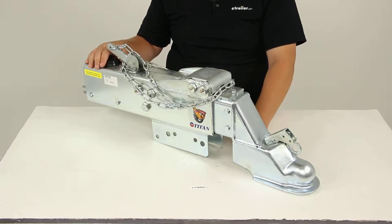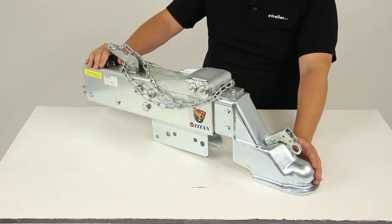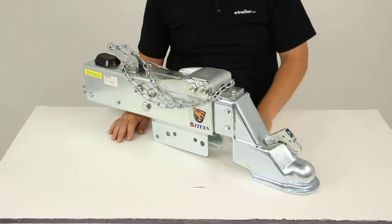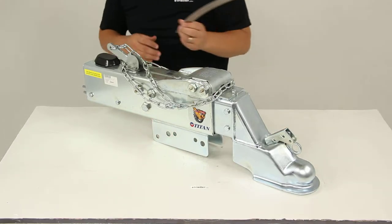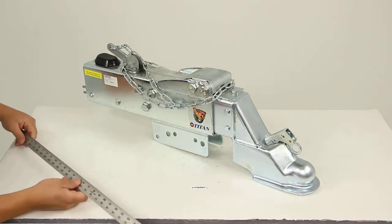It's also designed to work with disc brakes and it's going to fit a two and five-sixteenth inch hitch ball. This is a bolt-on design. You can see the different bolt holes down at this portion here.